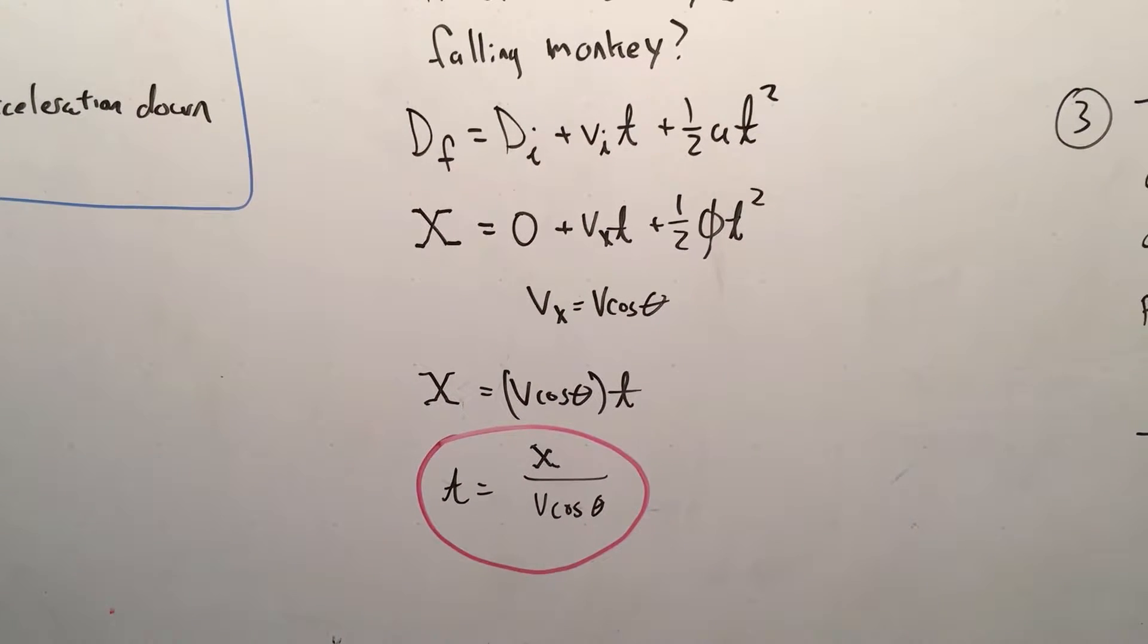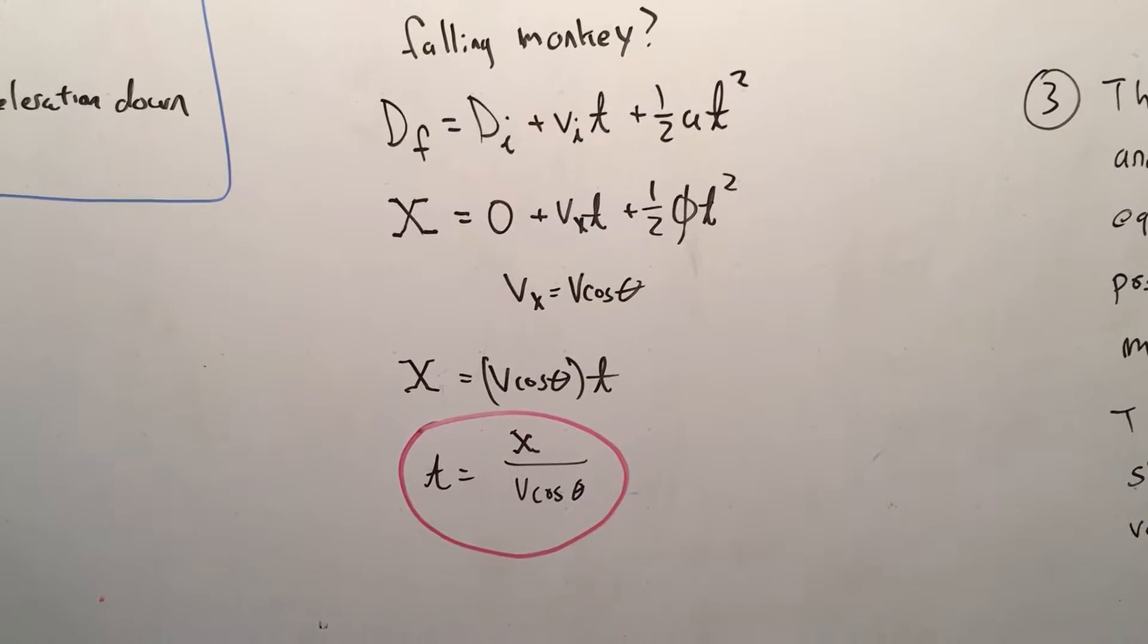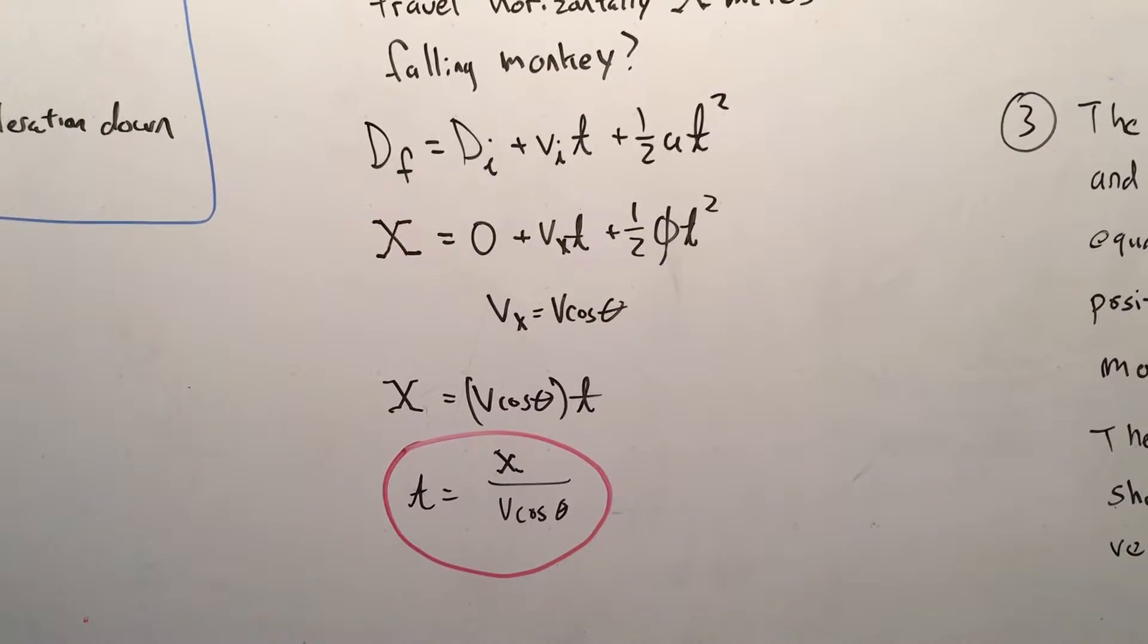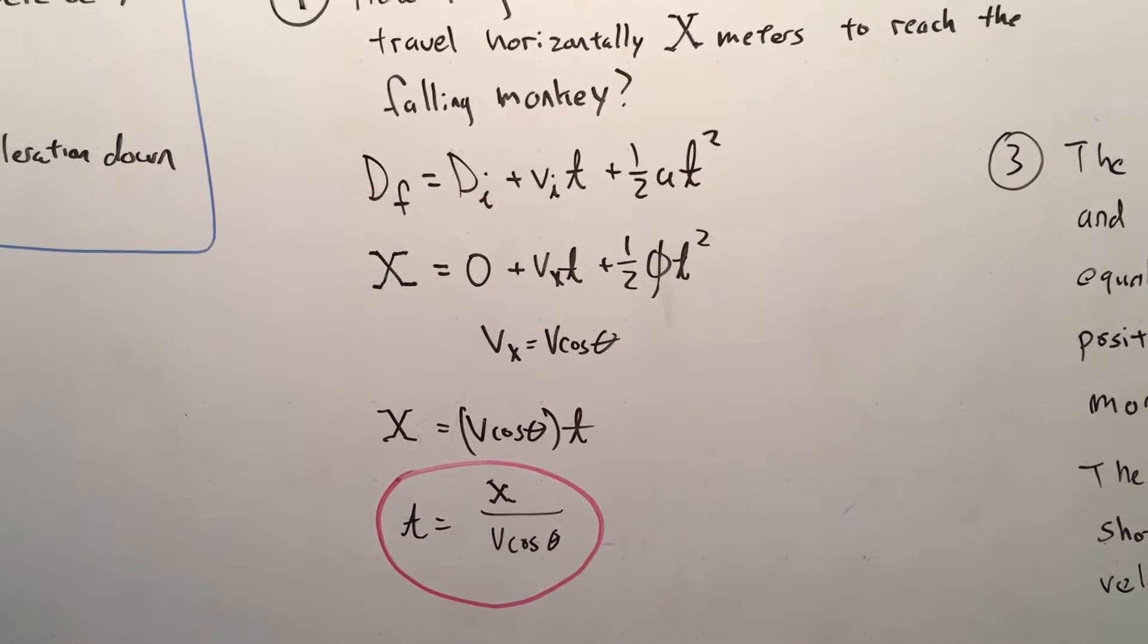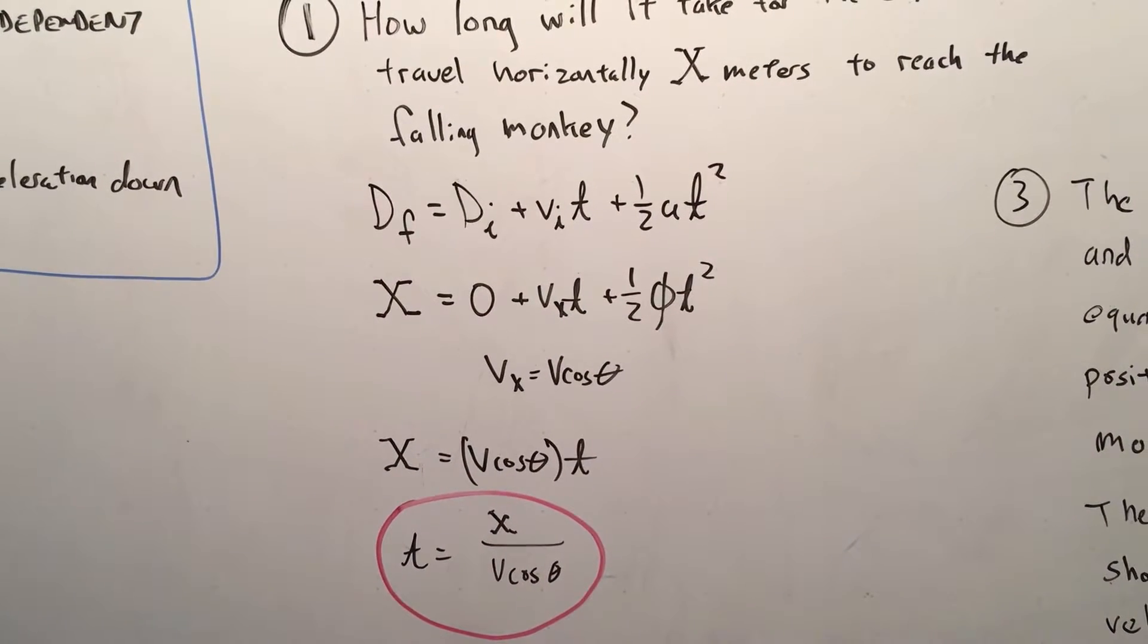Solve for t. You take the distance, divide it by the velocity. So you get time equals X over V cosine theta. So that's basically how long it's going to take the bullet to reach the tree or the vertical line where the monkey's hanging.